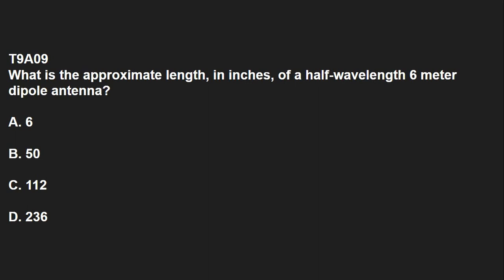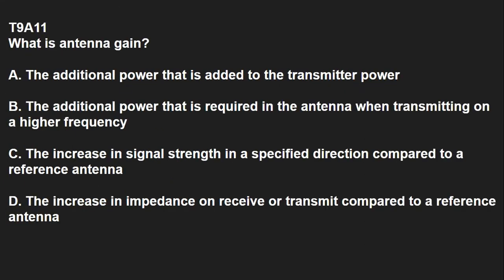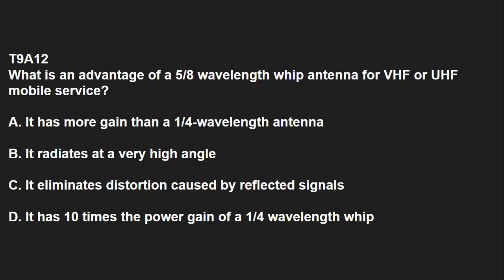T9A09: What is the approximate length in inches of a half-wavelength 6 MHz dipole antenna? That is 112 inches. T9A10: In which direction does a half-wave dipole antenna radiate the strongest signal? Broadside to the antenna. T9A11: What is antenna gain? Antenna gain is the increase in signal strength in a specified direction compared to a reference antenna. T9A12: What is the advantage of a 5-eighths wavelength whip antenna for VHF or UHF mobile service? It has more gain than a quarter-wavelength antenna.